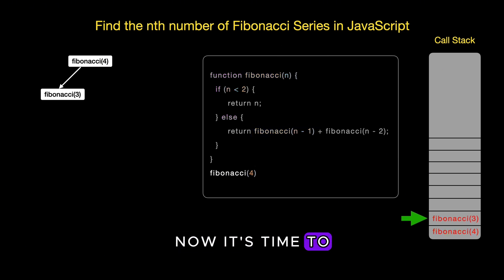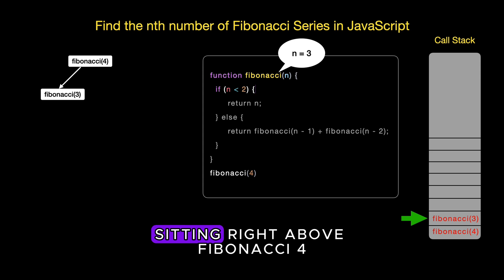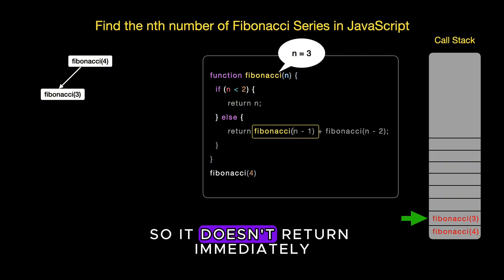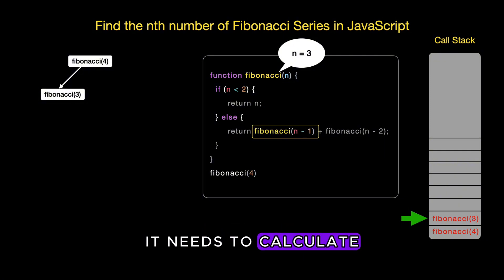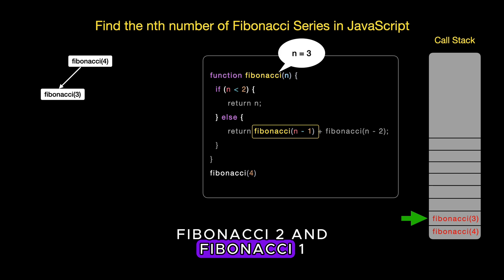And Fibonacci 3 can't wrap up until Fibonacci 2 and Fibonacci 1 return their values. Now it's time to see what happens with Fibonacci 3. We need to calculate Fibonacci 3. This is the next plate on our call stack sitting right above Fibonacci 4. Just like before, Fibonacci 3 is not less than 2 so it doesn't return immediately. It needs to calculate Fibonacci 2 and Fibonacci 1.